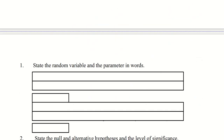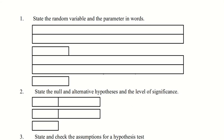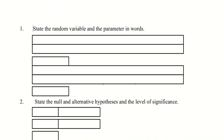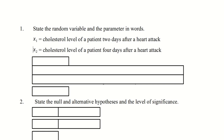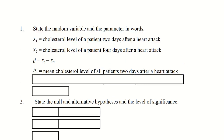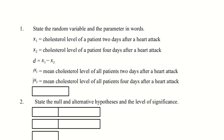Now it's our task to find the hypothesis test and go through this. The first thing we do is state the random variable in words, reminding ourselves that there are two. X sub 1 is the cholesterol level of a single patient two days after a heart attack, and X sub 2 is the cholesterol level of a patient four days after a heart attack. So D is the difference — that is X sub 1 minus X sub 2. The parameters are the population means: mu sub 1 is the mean cholesterol level of all patients two days after a heart attack, and mu sub 2 is the mean cholesterol level of all patients four days after a heart attack. Mu sub D is the difference of those population means, mu sub 1 minus mu sub 2.